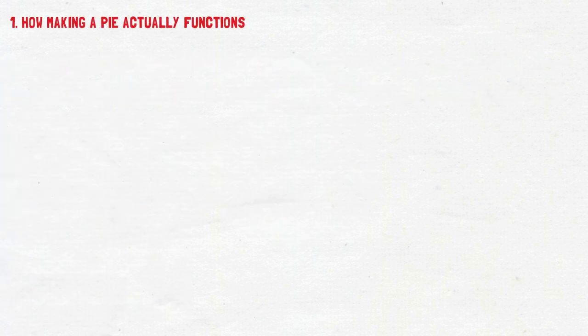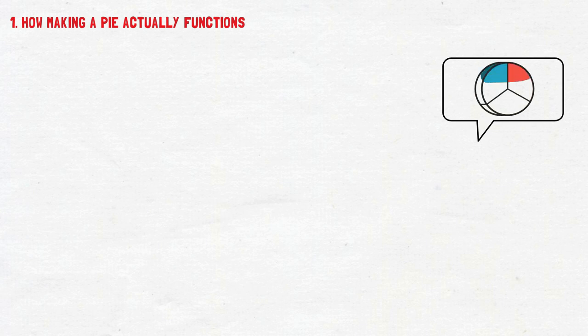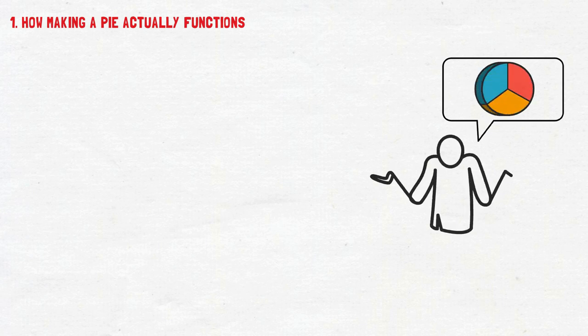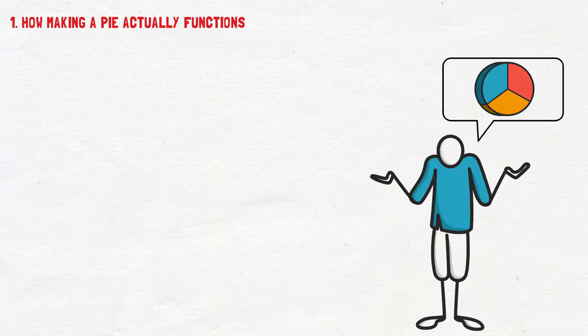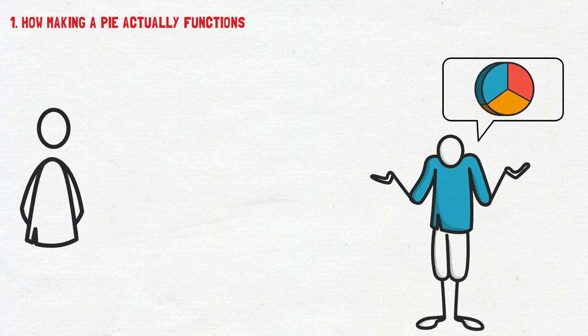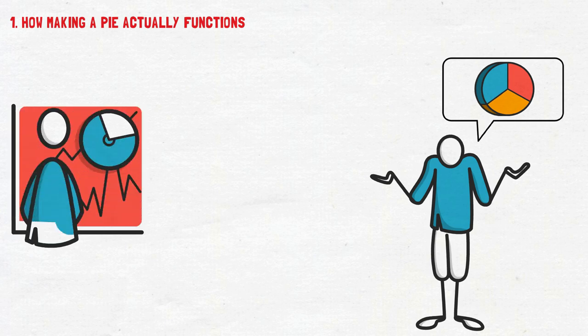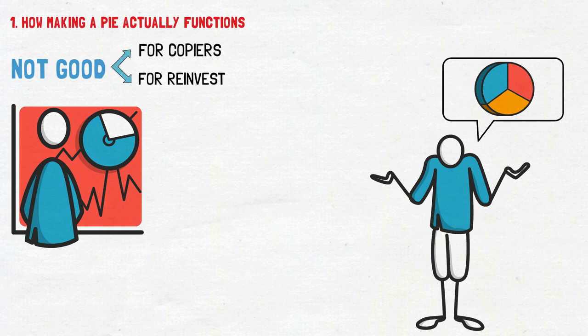Number one: how making a Pie actually functions. If you copy a Pie — and way too many people don't get this simple idea — you're copying at the time you select a copy and therefore at current prices. Therefore, constructing a Pie based on value investing is incredibly pointless. The price of the stocks may be very attractive at the time of creating the Pie, and that's fine for the creator, but not good for copiers or for reinvesting particularly.